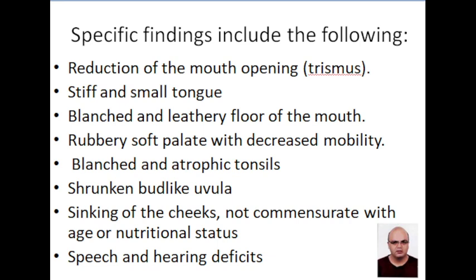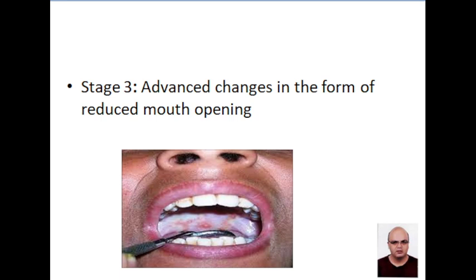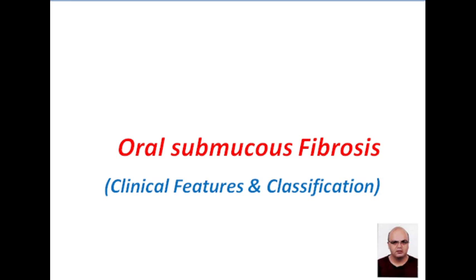Specific findings in stage two include trismus, small tongue, blanched and leathery floor of the mouth, rubbery soft palate with decreased mobility, atrophic tonsils, shrinking bud-like uvula, thinning of the cheeks independent of age or nutritional status, and speech and hearing defects. Stage three shows advanced changes in the form of reduced mouth opening.